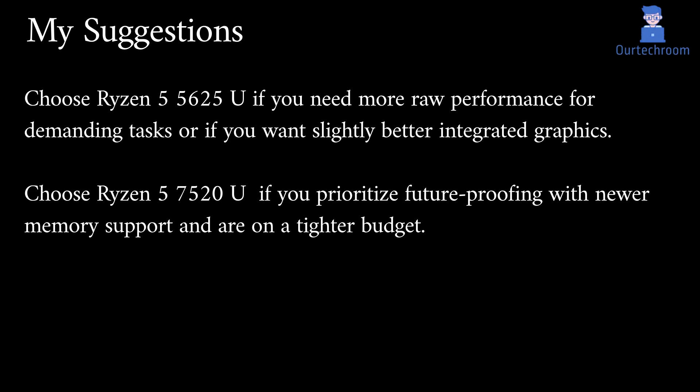My suggestions: Choose the Ryzen 5 5625U if you need more raw performance for demanding tasks or if you want slightly better integrated graphics. Choose the Ryzen 5 7520U if you prioritize future-proofing with newer memory support and are on a tighter budget.